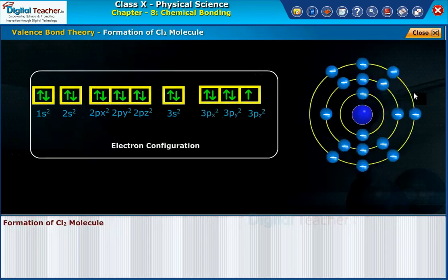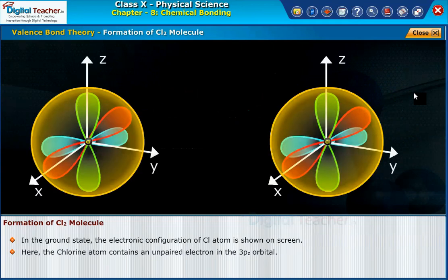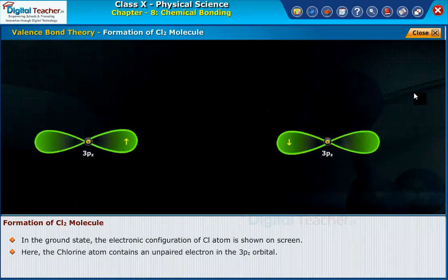Formation of chlorine molecule. In the ground state, the electronic configuration of chlorine atom is shown on screen. Here, the chlorine atom contains an unpaired electron in the 3pz orbital.